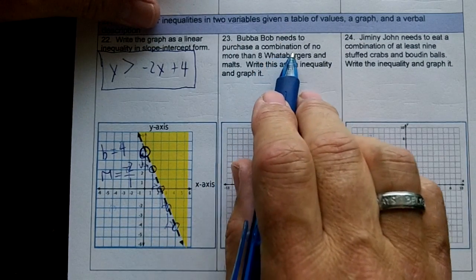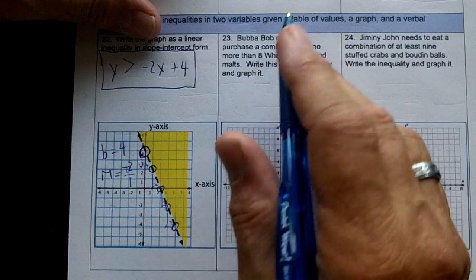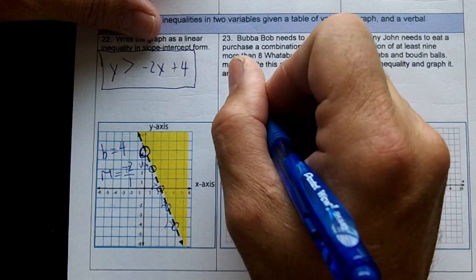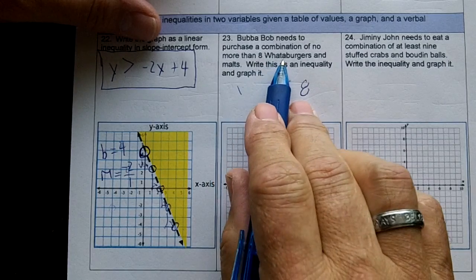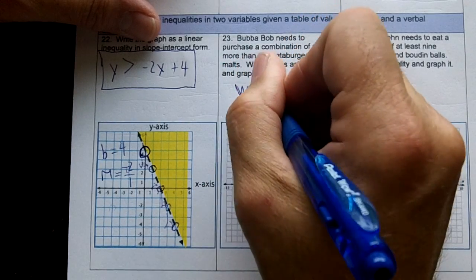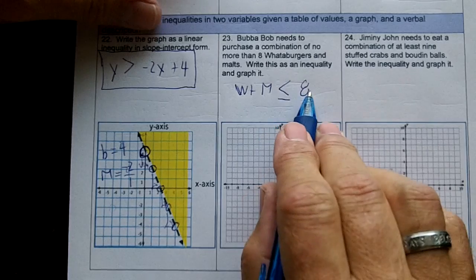Okay, Bubba Bob needs to purchase a combination of no more than eight. No more than eight means it's less than or equal to eight. And he needs to purchase waterburgers and malts. So the waterburgers and the malts can't be more than eight.